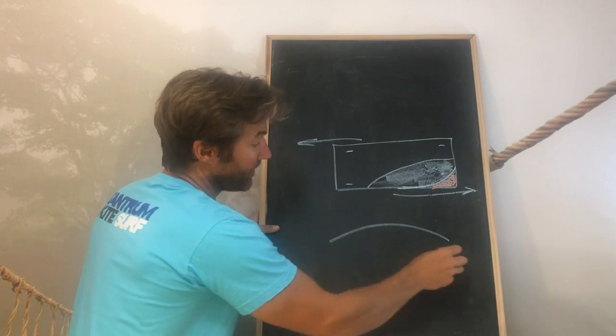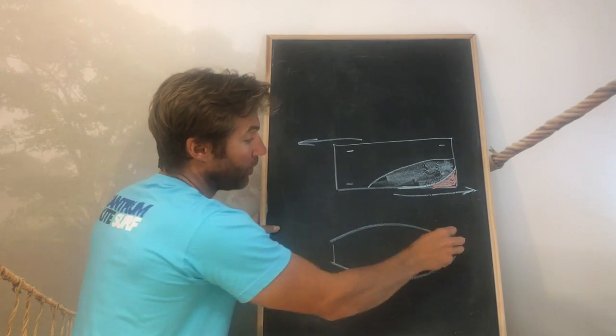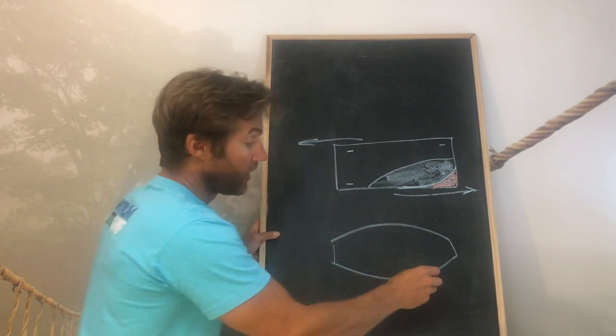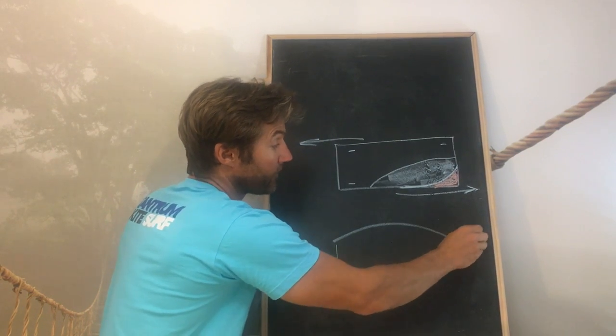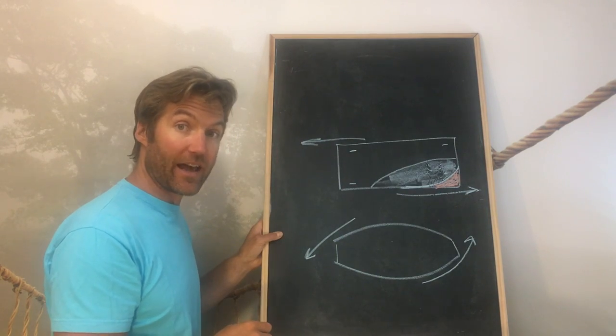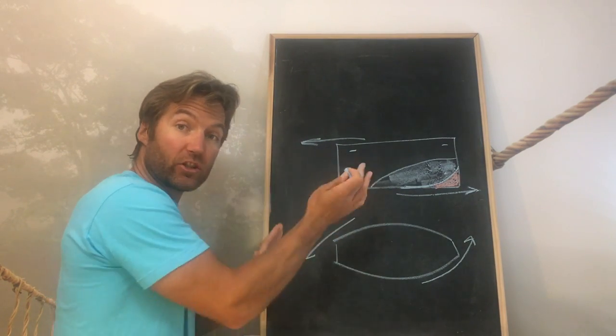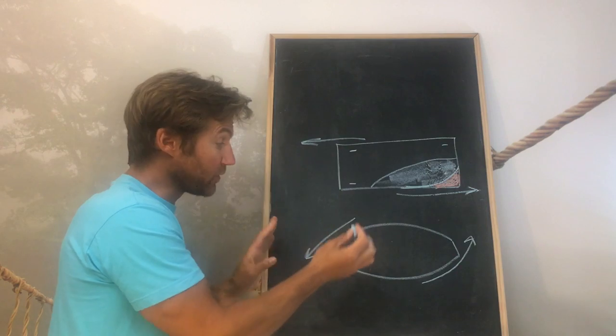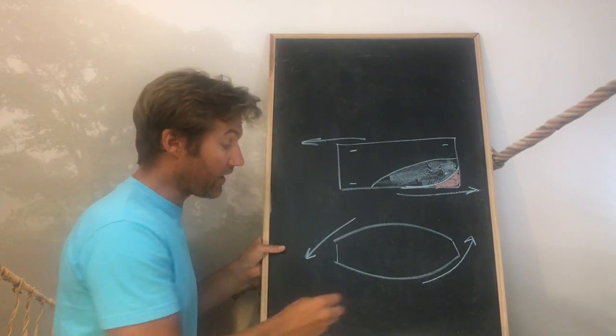With a rugby shaped board - and this is obviously an extreme example - the water is releasing off it in that direction. So the opposite reaction is there. The board is wanting to turn all the time, so it's much more difficult to ride it in a straight line.